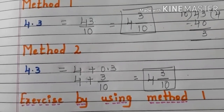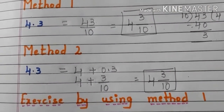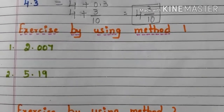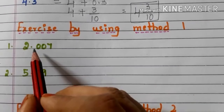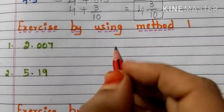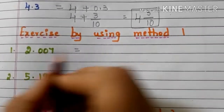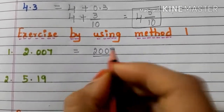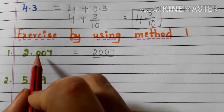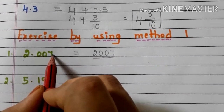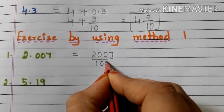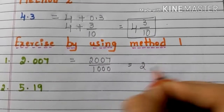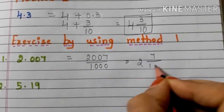In this way we can convert decimals into fractions. Now let us do a small exercise using Method 1. Here we have the first decimal number 2.007. Write the number without any decimals: 2007 by — let us count how many digits are there after the decimal point: 1, 2, 3. So in the denominator we need to write 1000. Now convert this fraction into a mixed fraction: 2 and 7 by 1000.